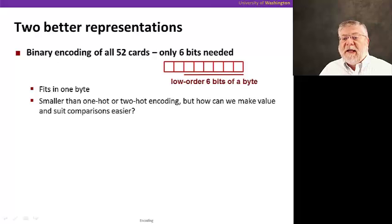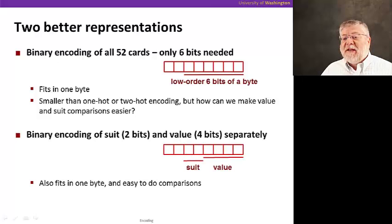It's much smaller than the one or two hot encoding. But how can we make the value comparisons easier, the suit comparisons easier? We're still going to have all the cards numbered from one to 52, and that will not make it easy to do those comparisons.